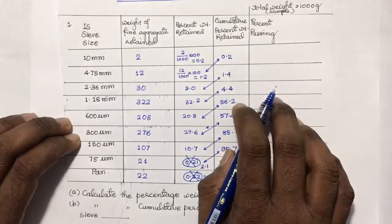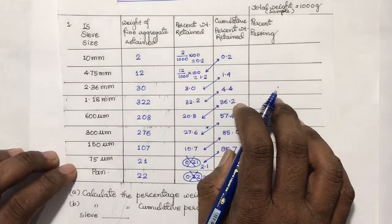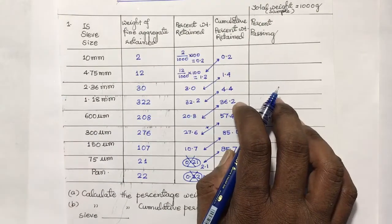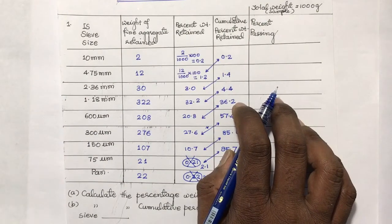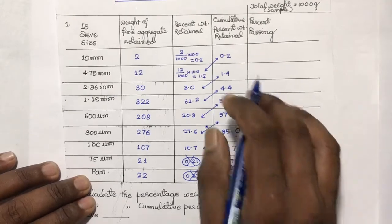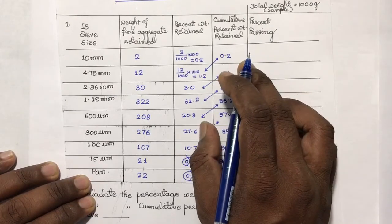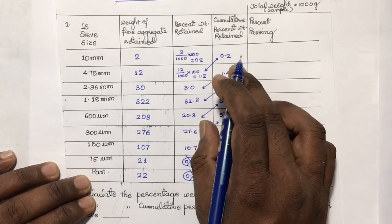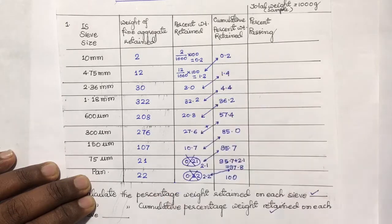Now we have to find the percentage passing through each sieve. The percentage passing through each sieve is calculated by subtracting the cumulative weight percentage retained on each sieve from 100.